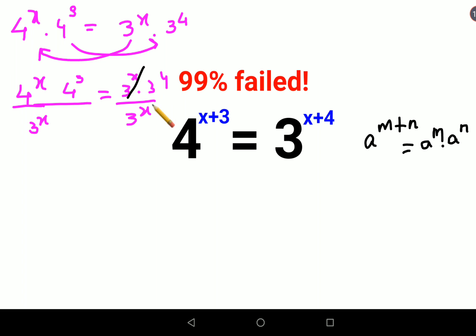So now what happens over here is this and this is cancelling. And here what we are left with is 4 raised to x upon 3 raised to x times 4 raised to 3 equals 3 raised to 4. Now like I said we will put the number also on the other side. It means we will divide both sides by 4 raised to 3.